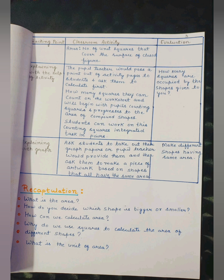Explaining with graph: Ask students to take out their graph papers or teacher would provide them and then ask them to make a piece of artwork based on shapes that all have the same area. Make different shapes having same area.